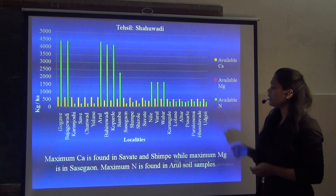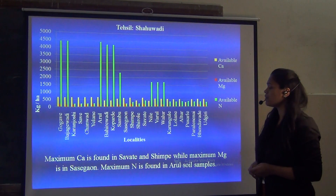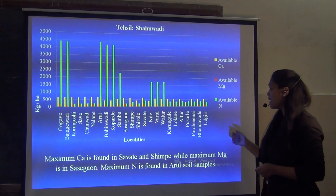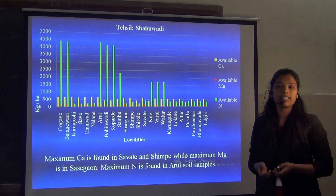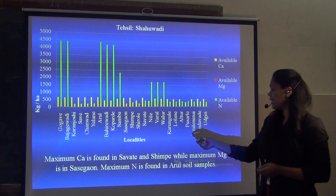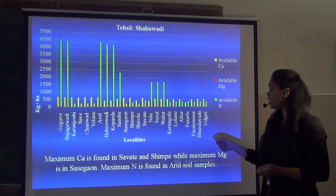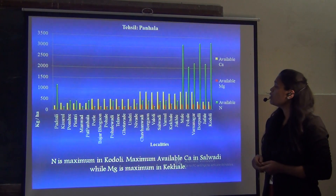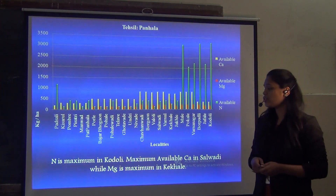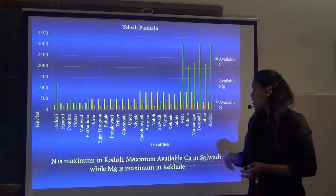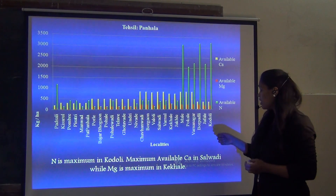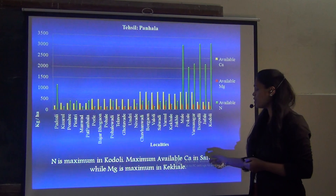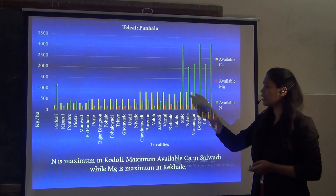From the Shavwadi region, maximum Calcium is found in the Salte and Shimpe region, while maximum Nitrogen is found in the Saseghar region and maximum Nitrogen is in the Arurud samples. From the Kanwana region, Nitrogen is maximum in the Koduli region, maximum available Calcium is in the Salwadi, while maximum Magnesium is found in the Tekele region.